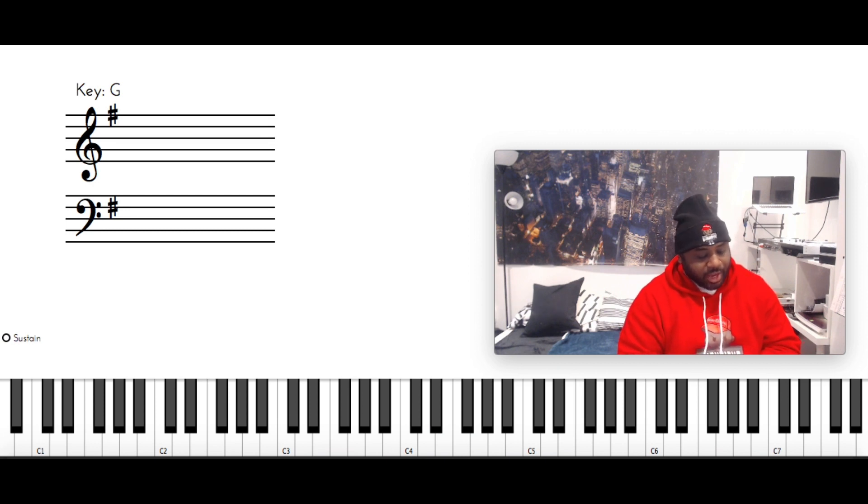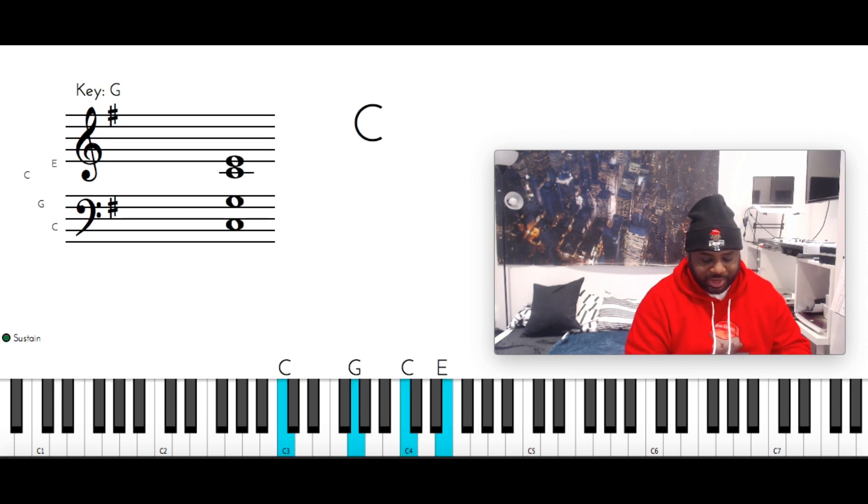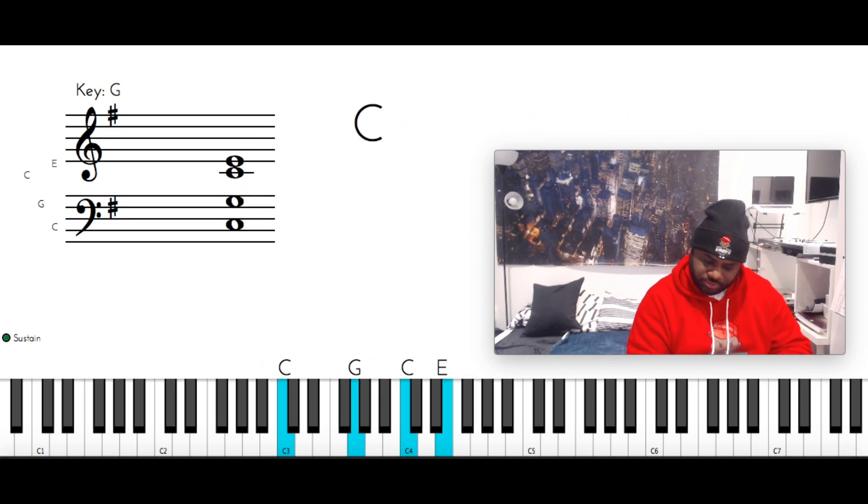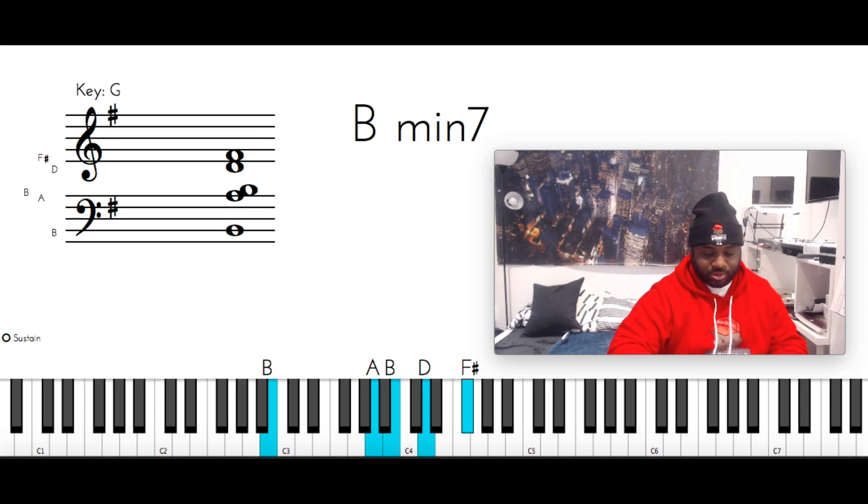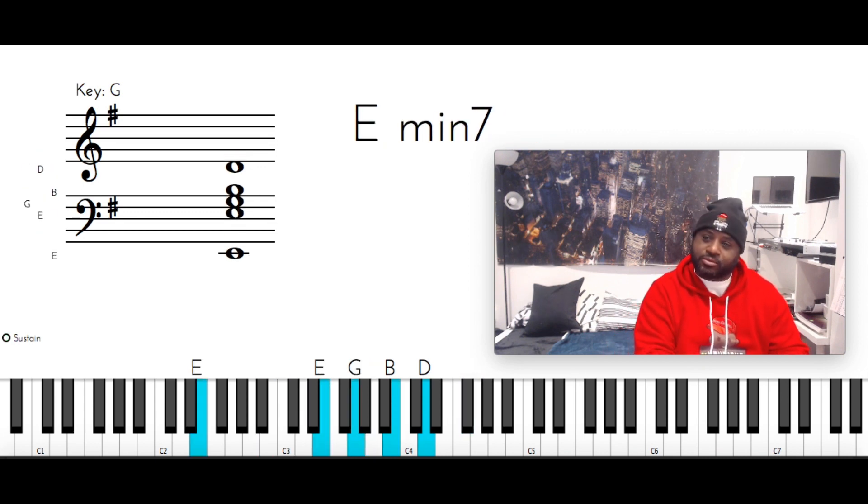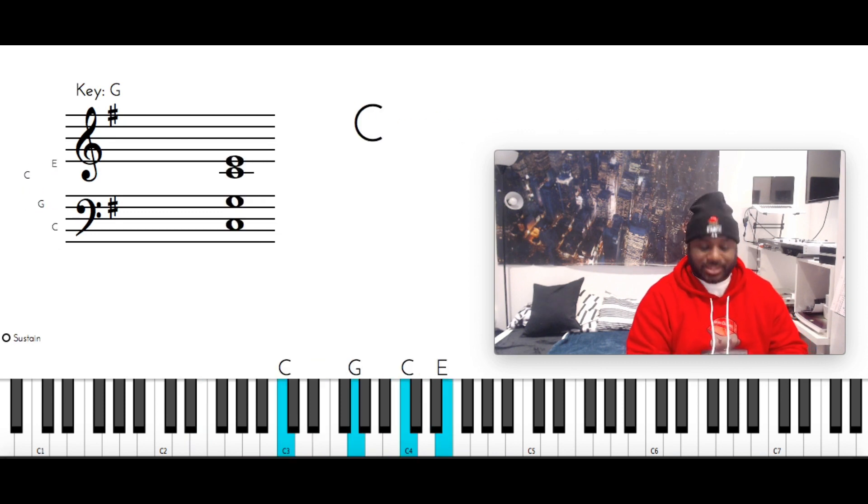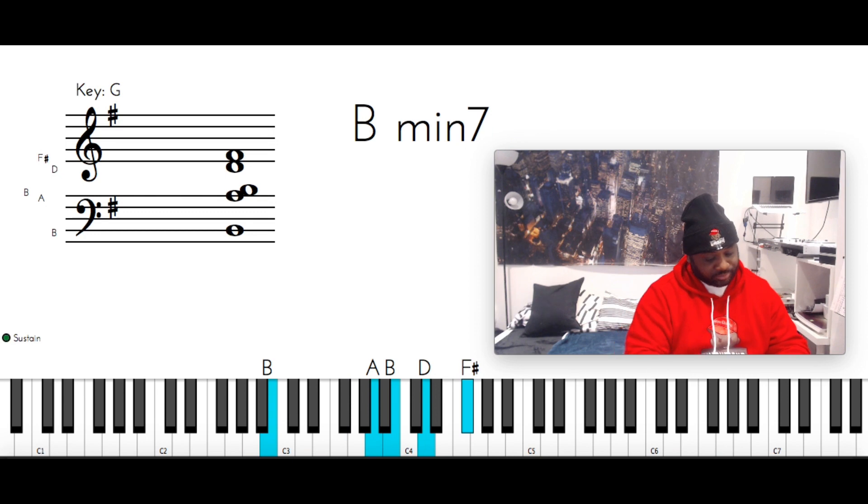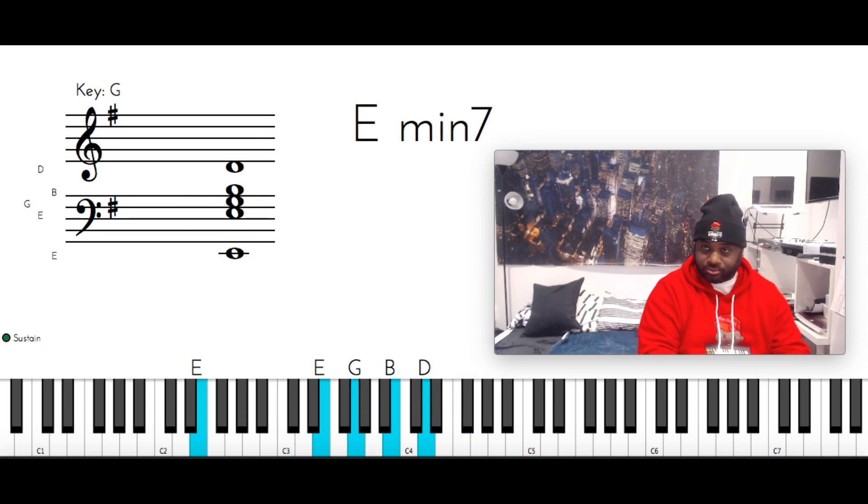Now when you get to like the little breakdown, it's going to go C major, D major, D minor 7, E minor 7. So you're going to have a loop of that, then you go back into the normal.